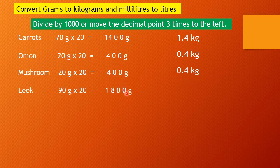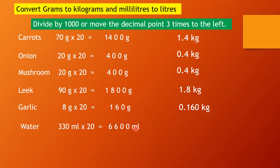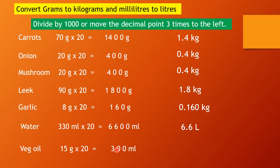Next is 1,800 grams. Move the decimal point to the left 3 times — the answer is 1.8 kilograms. Next is 160 grams: move to the left 3 times, then add a zero — 0.160 kilograms. Next is 6,600 ml: to convert ml to liters, move the decimal point to the left 3 times — the answer is 6.6 liters. And the last one is 300 ml: move to the left 3 times — the answer is 0.3 liters.